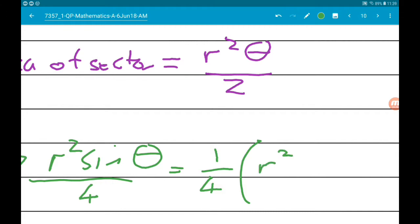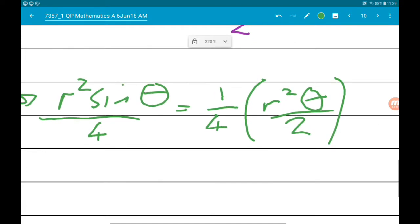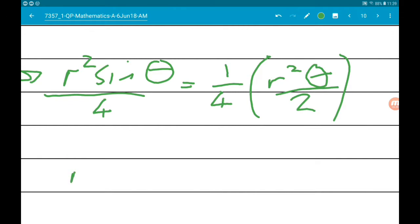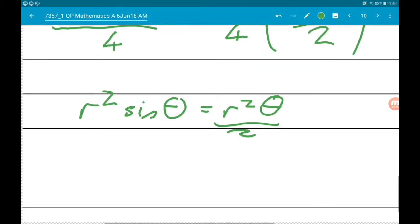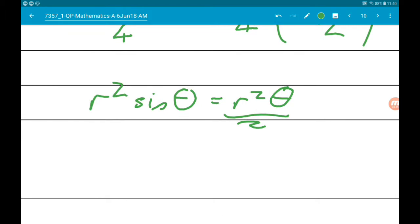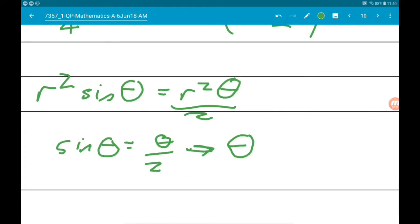Okay, multiply both sides by four, and we get R squared sin theta is equal to R squared theta over two. There's a common factor on both sides of R squared, divide that away. Sine of theta is equal to theta over two. Therefore, multiply by two gives us that theta is equal to two sine of theta. Cool.